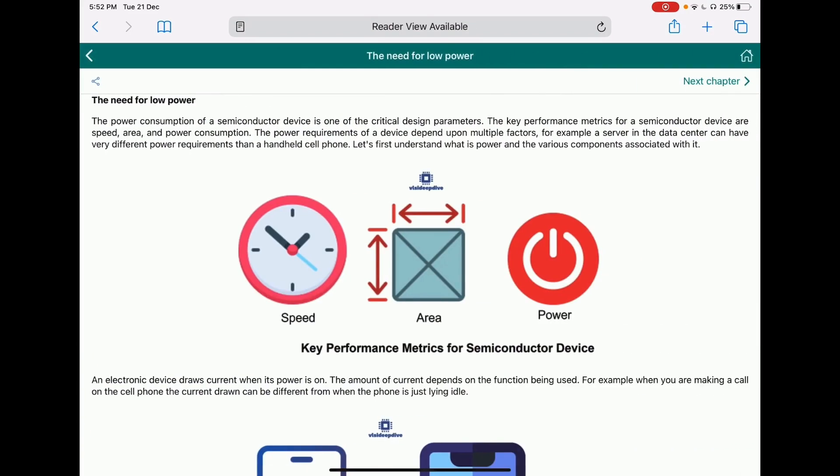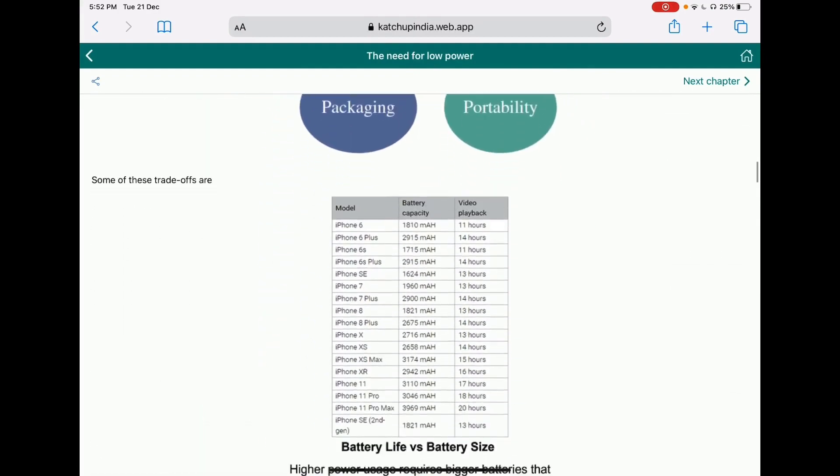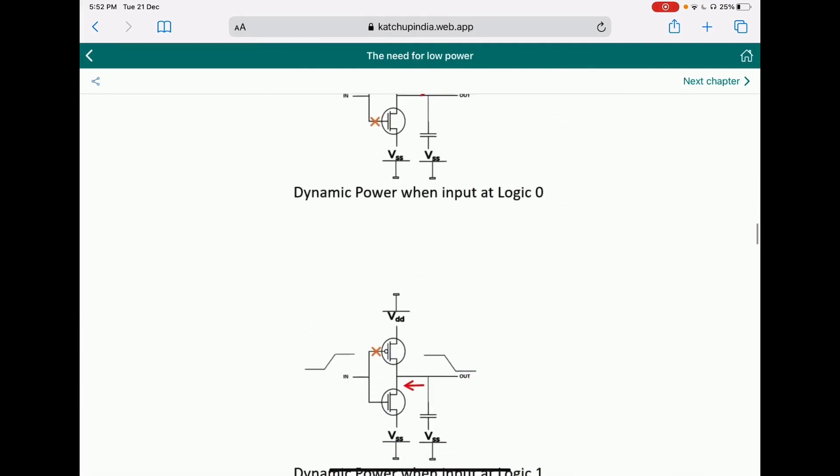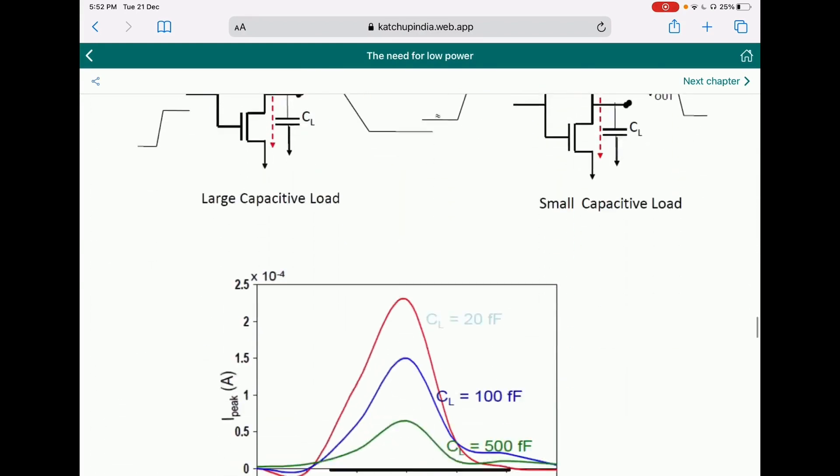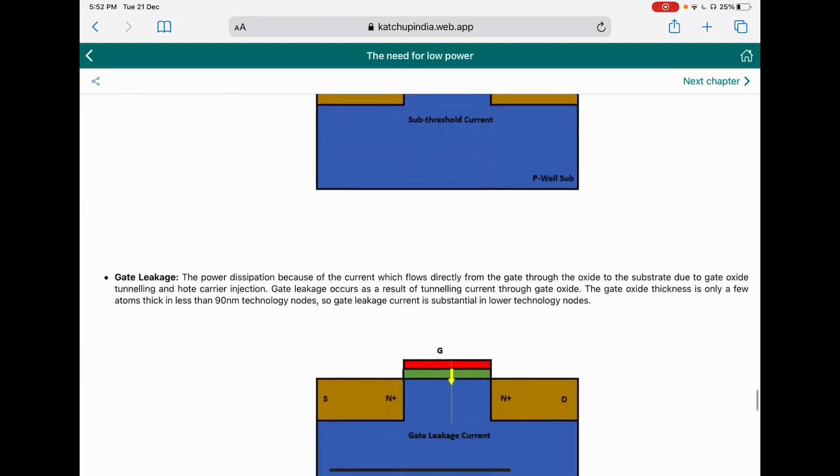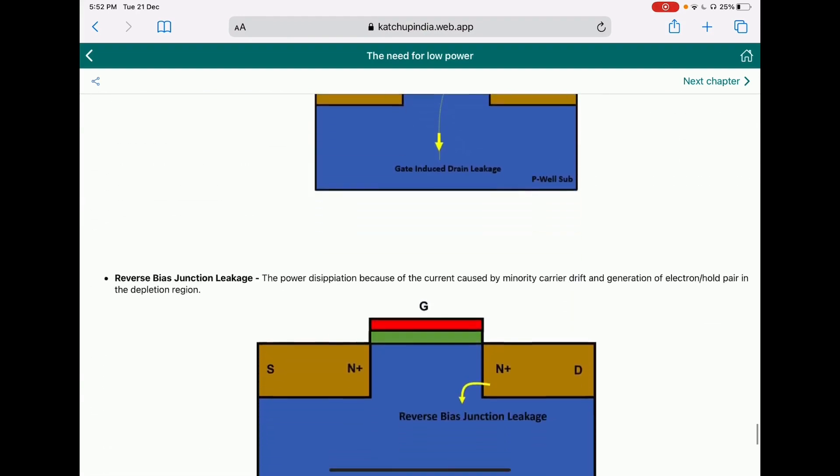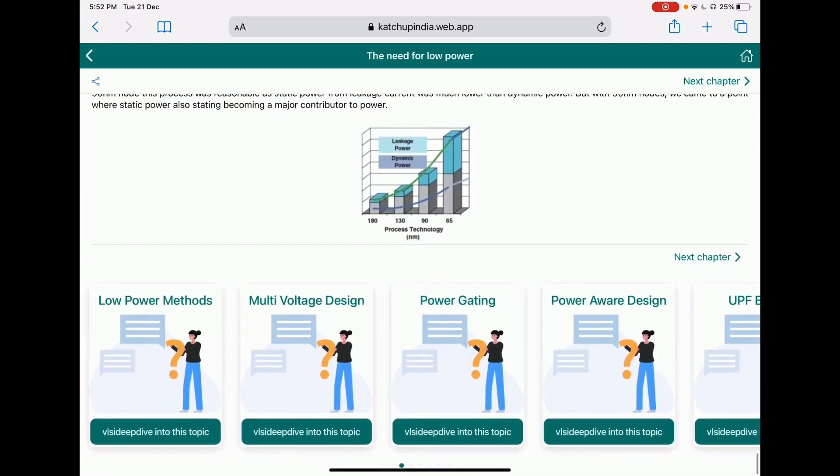Let's see what is in each chapter. The first chapter talks about basics of power, the need for low power, what is dynamic power and static power, the equations for those, how to reduce dynamic power, the various kinds of leakage power, the various currents which impact leakage power, and how leakage power is evolving over multiple technology nodes.